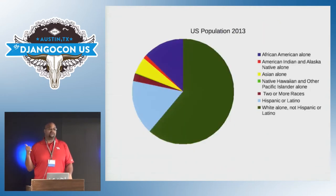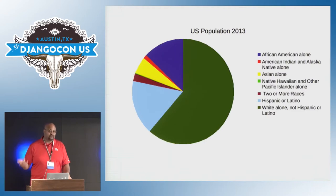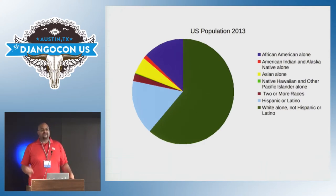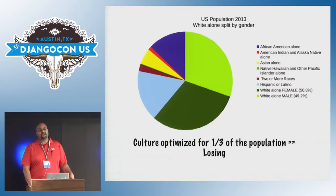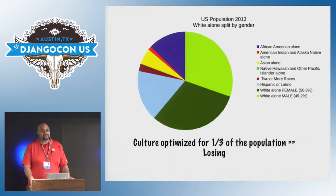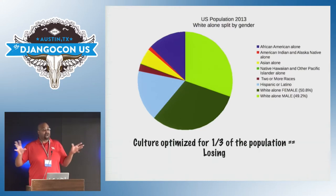What does that look like? If we take a look at the U.S. population — broken up by ethnicity as defined by the Census Bureau — the big green chunk is people identified as white, light blue is Hispanics or Latinos, dark blue is African Americans. But if we separate the white group by gender, that dark green chunk gets a lot smaller. If we have a culture optimized for primarily heterosexual white men, we're pulling from about 30 to 31 percent of the population — which is a small pool — and we're overlooking two-thirds of the population.